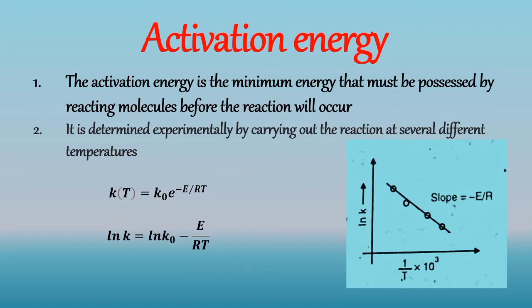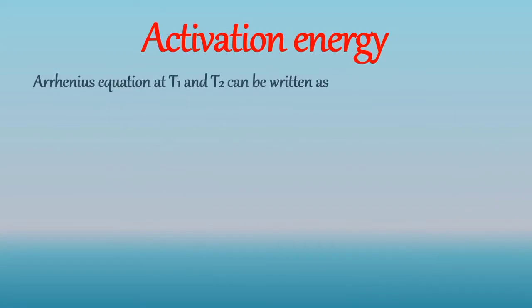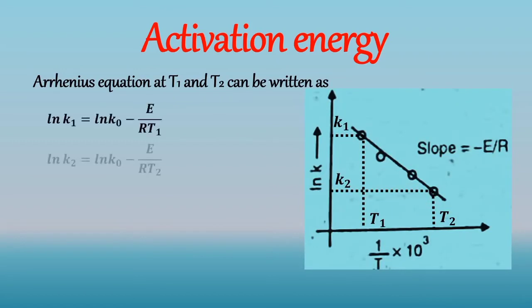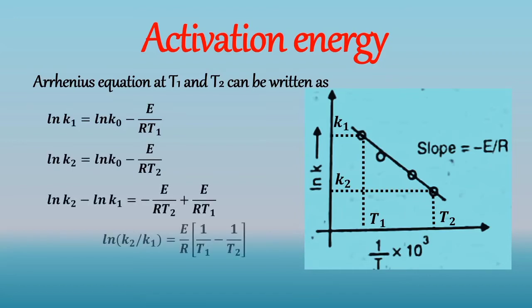Now, to calculate E that is activation energy mathematically, we have to obtain rate constant K1 and K2 at temperature T1 and T2 respectively. Hence Arrhenius equation at T1 and T2 can be written as. After rearranging the term we get ln of K2 by K1 is equal to E by R into 1 by T1 minus 1 by T2. So by putting the values of K1, K2 and T1 and T2, we can calculate E that is the activation energy.